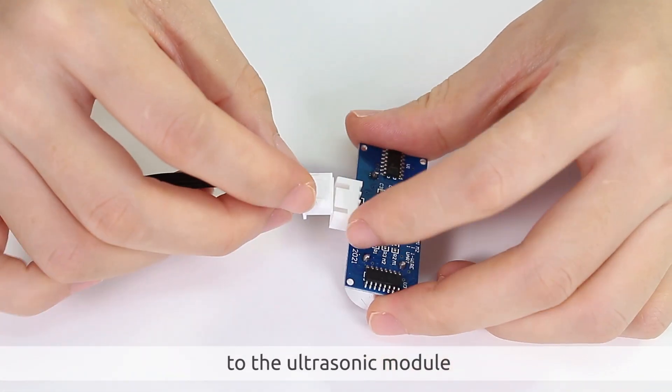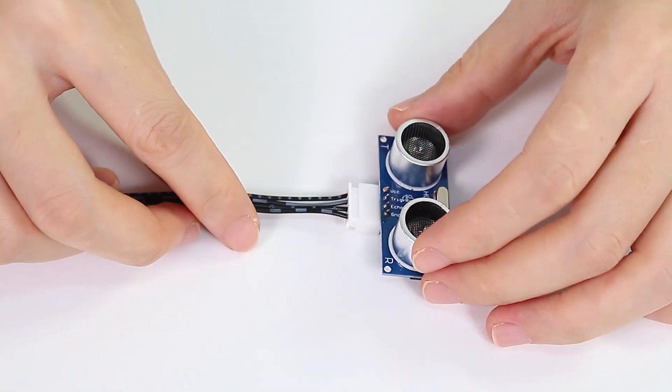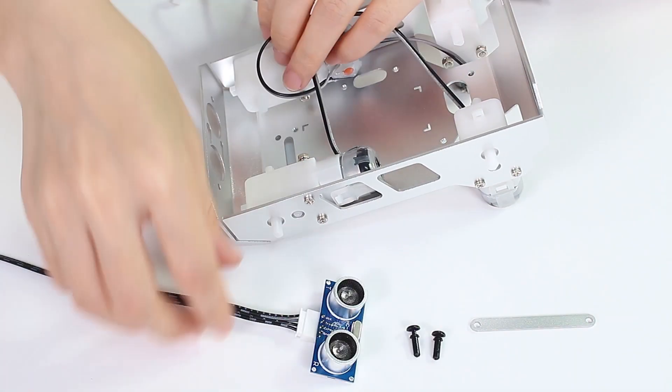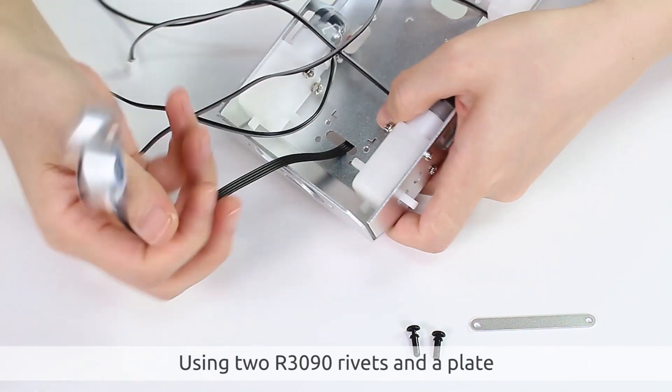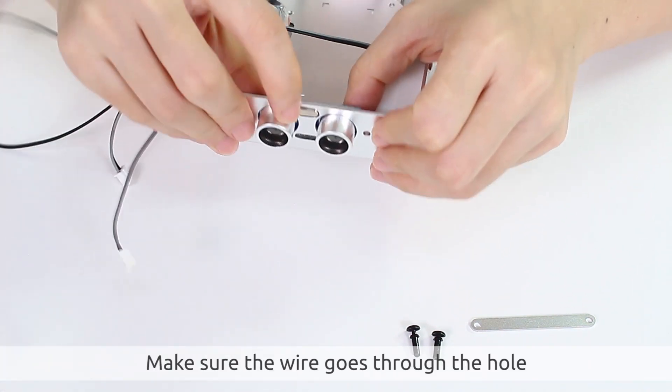Now connect a four-pin wire to the ultrasonic module. Using drawer 3090 rivets and a plate, secure it to the front. Make sure the wire goes through the hole.